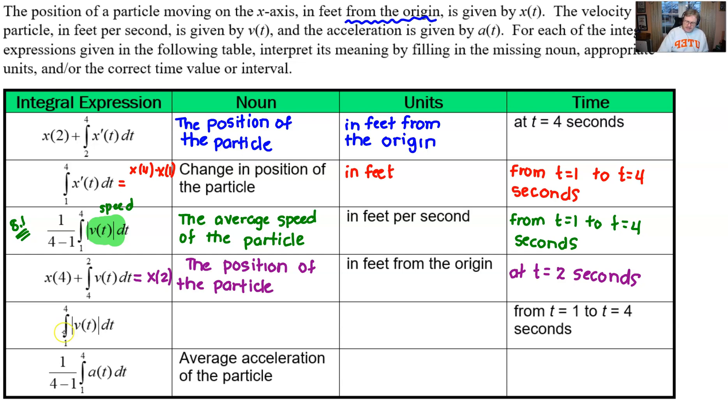Perhaps this fifth one was a little familiar, the integration from 1 to 4 of the absolute value of velocity. Remember, this is speed. If you integrate speed, you're always going to get total distance the particle traveled. And so we'll write it up as such. The total distance the particle travels. Now we're also going to have to fill in the units for this. So it's probably likely that you're thinking feet, which is certainly correct.